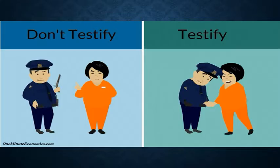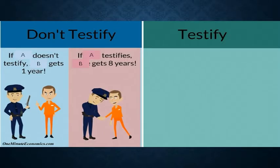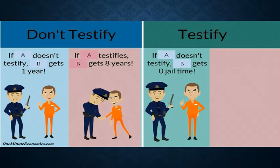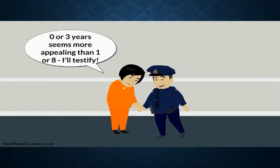If A doesn't testify against B, he faces two outcomes: one in which he gets one year, and one in which he gets eight years. If he testifies, he gets either zero jail time or three years. Testifying therefore seems more appealing. The same logic applies to B.